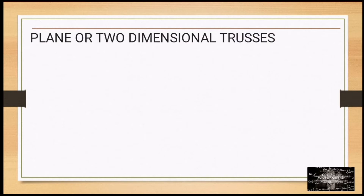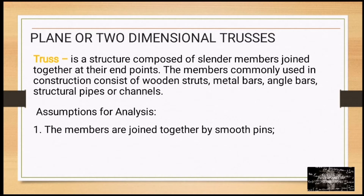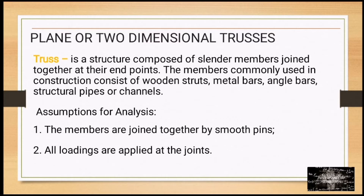Welcome to my presentation. This is Lecture 006: Analysis of Plane or Two-Dimensional Trusses. A truss is a structure composed of slender members joined together at their endpoints. Members are commonly used in construction and consist of wooden struts, metal bars, angle bars, structural pipes, or channels. Assumptions for analysis: number one, members are joined together by smooth pins; number two, all loadings are applied at the joints.